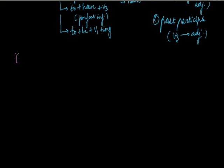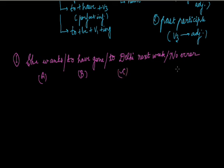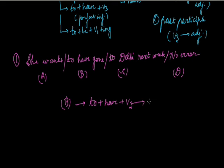First example: 'She wants to have gone to Delhi next week.' This sentence has four parts: A, B, C, and D. Can you tell me which part contains the error? The error is in part B — the use of 'to have gone' is absolutely incorrect.